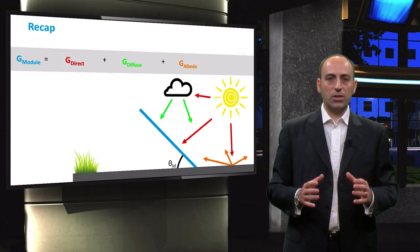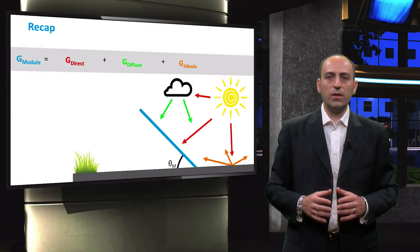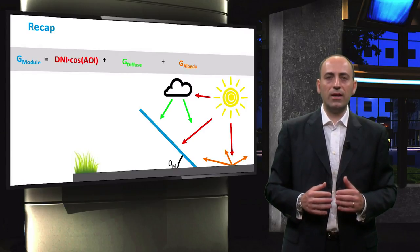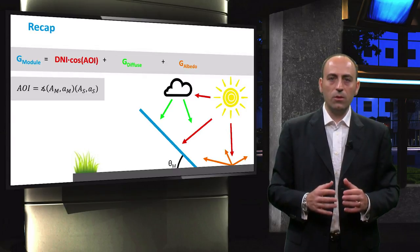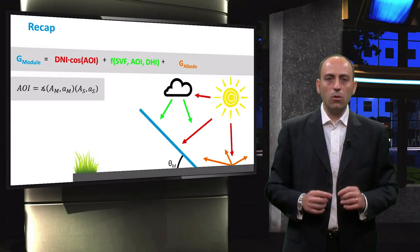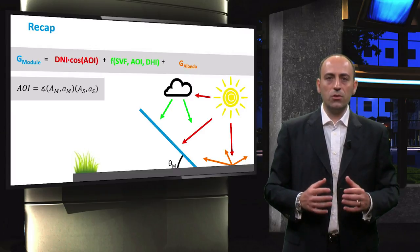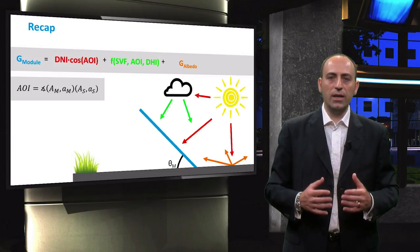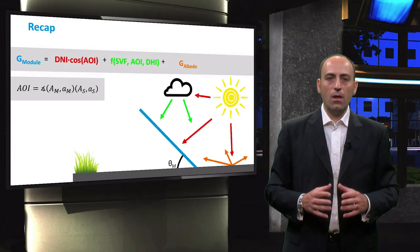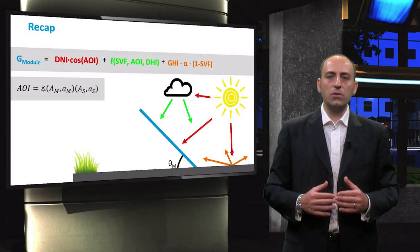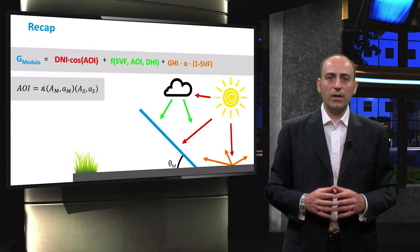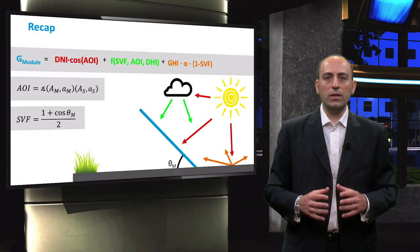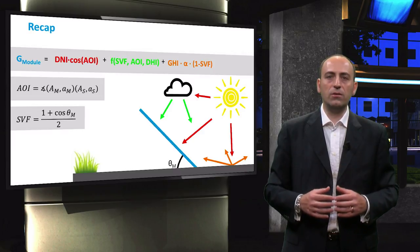To recap, let's go back to this sketch. We divided the irradiance incident on the surface of a module into three components. The direct irradiance can be calculated by multiplying the direct normal irradiance by the cosine of the angle of incidence. The latter was derived using trigonometry. The second component is the diffuse irradiance, which depends on your choice of sky model and the available measurements. Generally, the diffuse irradiance is a function of the sky view factor, the DHI, and again, the angle of incidence. The third component is the albedo and it depends on the global horizontal irradiance, the albedo value of the surrounding ground, and again, the sky view factor. The formula to compute this factor depends only on the tilt angle of the module and it is necessary to obtain the diffuse and albedo components.